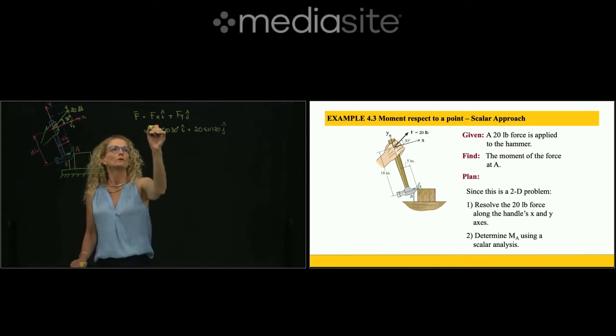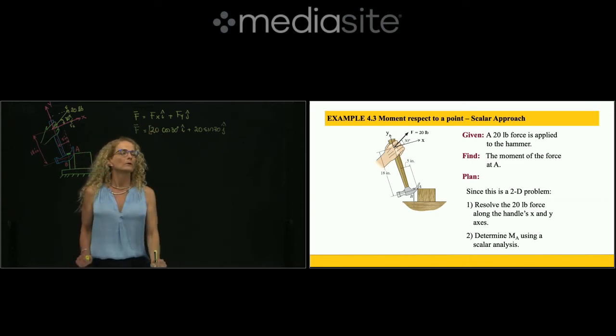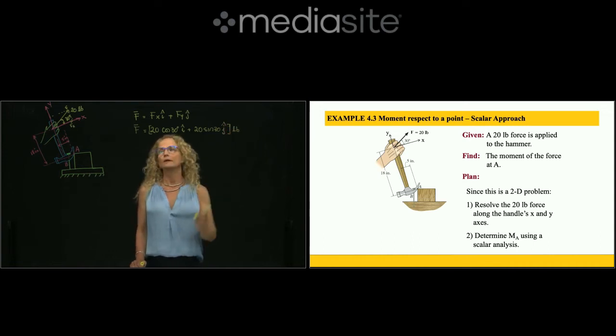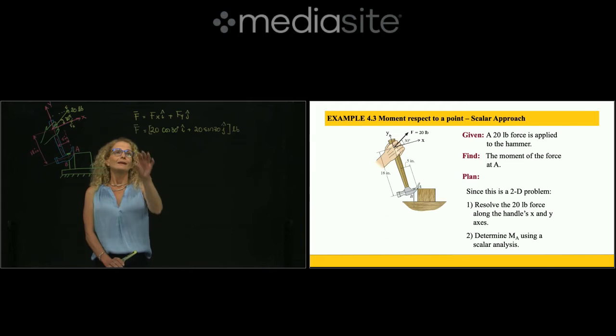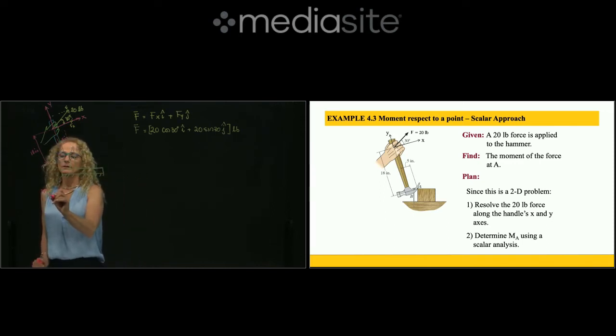So this is my force in pounds as a vector in terms of its components. Let's see how these components produce moment with respect to point A. As you recall, the definition of moment as a vector is the distance times the force vector cross product. And as a scalar approach, it will be the distance times the force, and this force has to be perpendicular, so d and F are perpendicular.